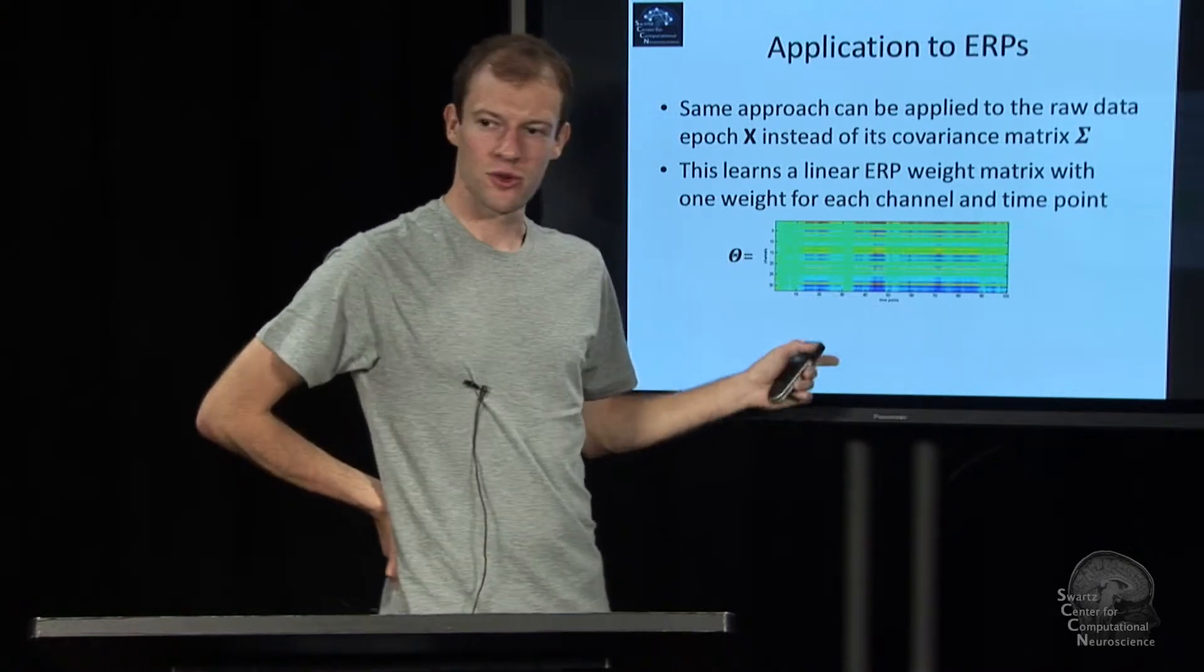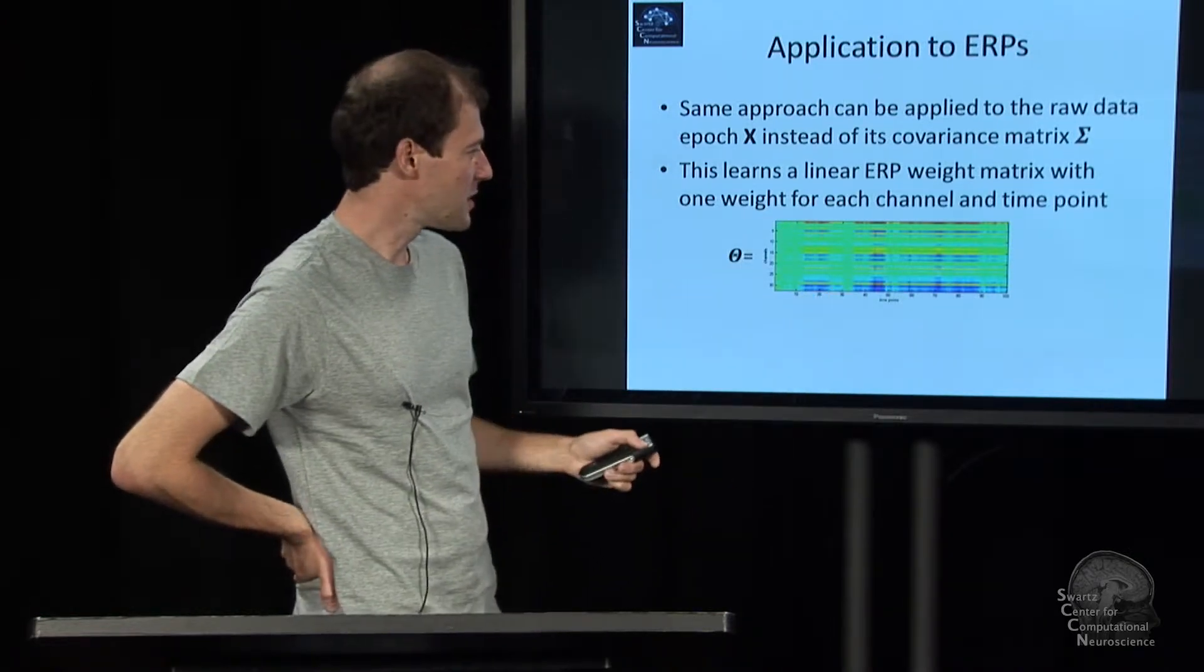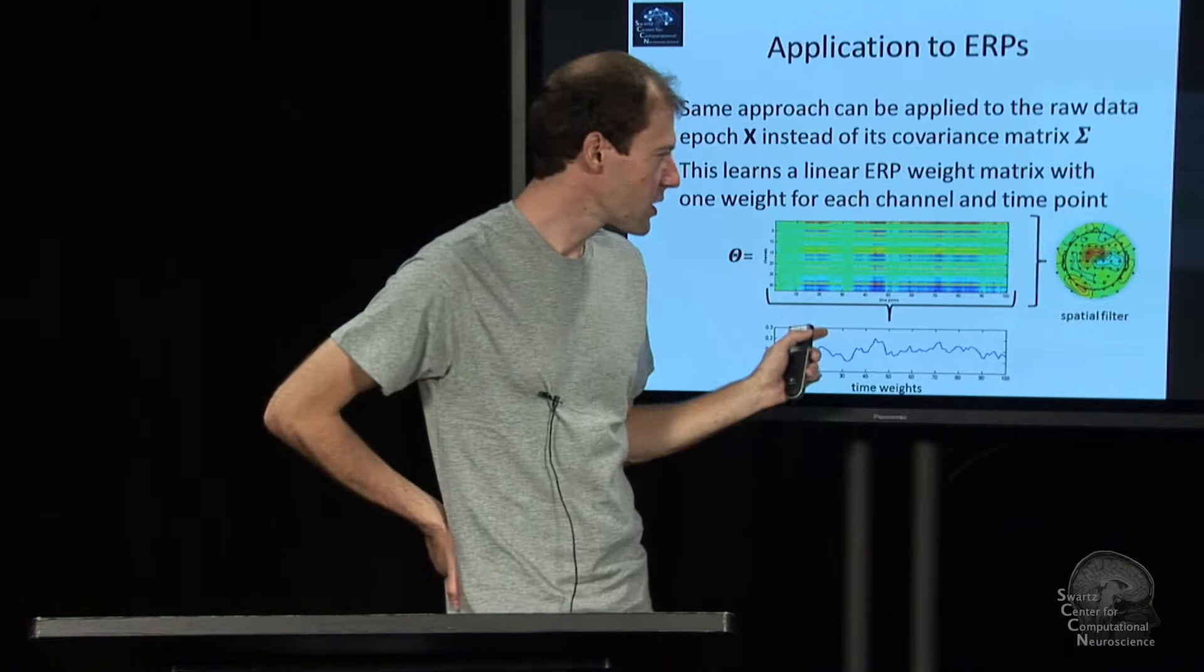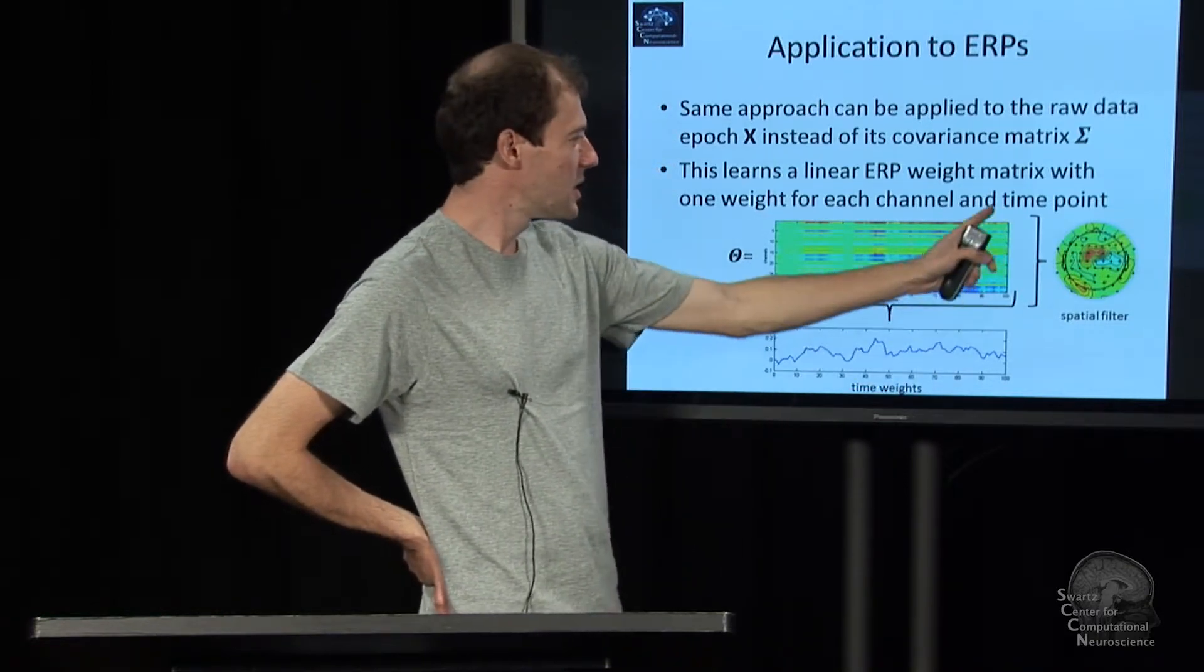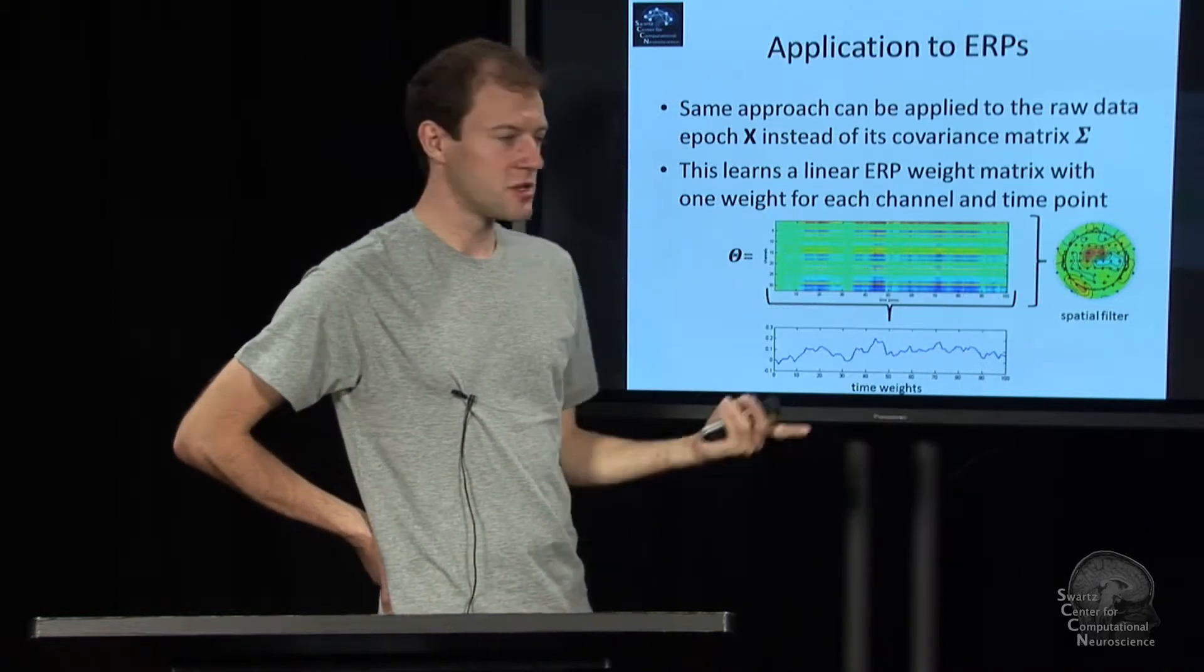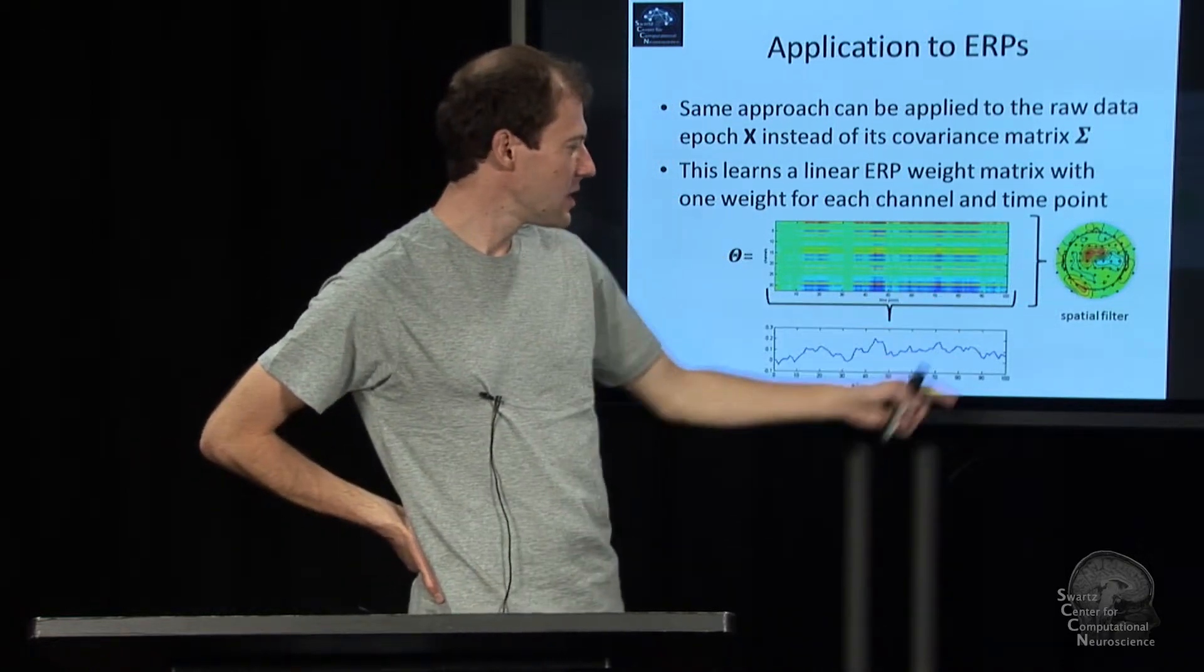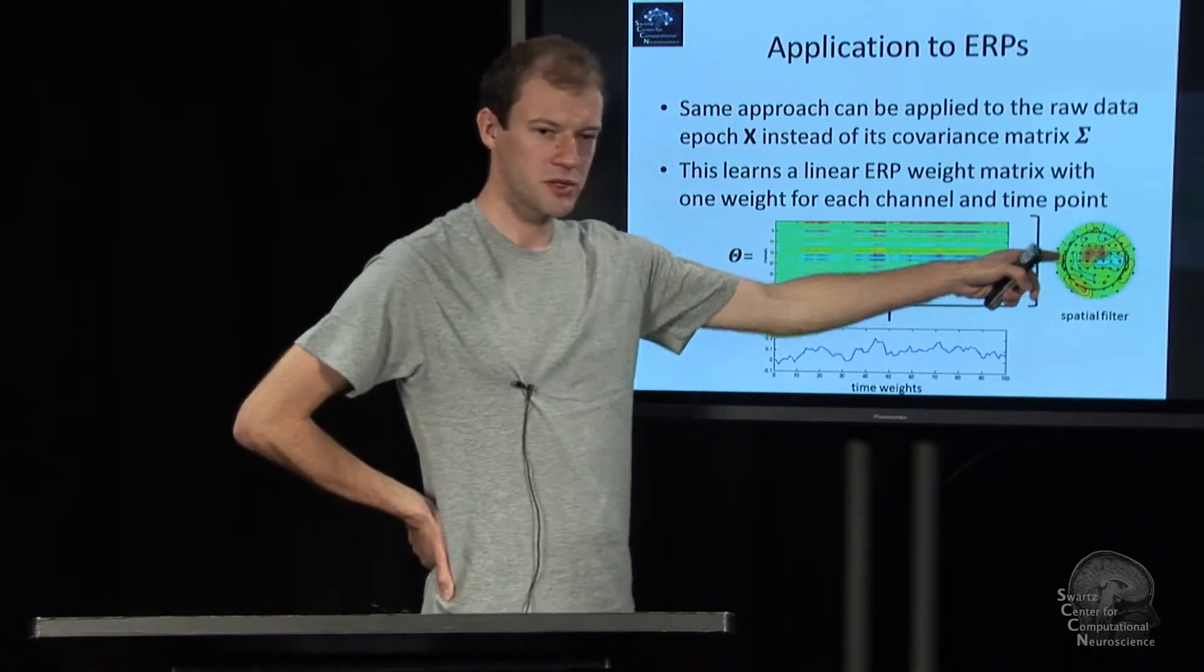And so this matrix is not arbitrary that we learn. It's going to be low-rank, and so you can view it as a product of something here and something there. If you think about what that means, for a rank-one matrix, the loading across channels is basically a spatial filter again. And the loading across time is the weights over time for a source that is picked up by the spatial filter.